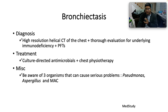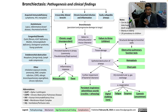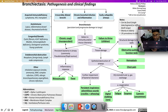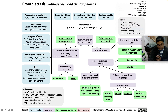Treatment in this specific instance is culture-directed antimicrobials and chest physiotherapy. Please be aware of three organisms that can cause serious problems in this scenario: Pseudomonas, Aspergillosis, and Mycobacterium avium complex. Now here's a beautiful infographic from the Calgary Guide — a beautiful resource — and we're talking about the pathogenesis and clinical findings behind bronchiectasis.